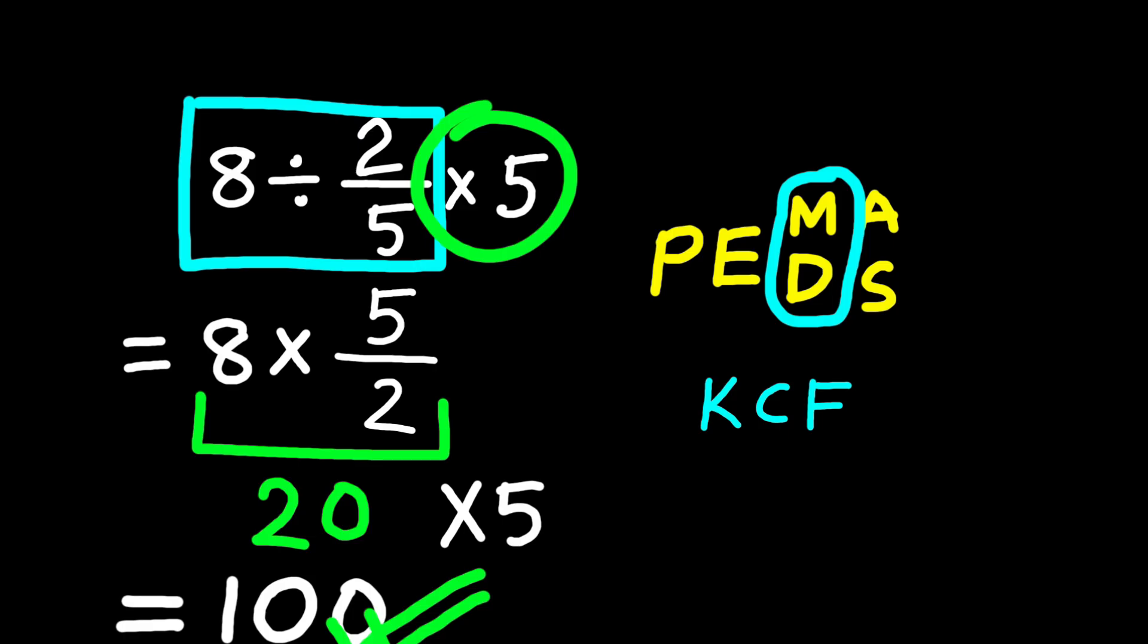See what happened? If you rushed to cancel, you fell right into the trap. The secret was following order of operations and respecting fractions.